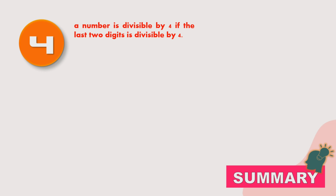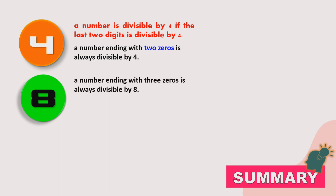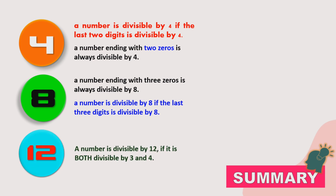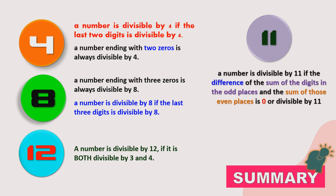Now, we are going to summarize the divisibility rules for 4, 8, 12, and 11. For 4: a number is divisible by 4 if the last 2 digits is divisible by 4; also, a number ending with 2 zeros is always divisible by 4. For 8: a number ending with 3 zeros is always divisible by 8; and a number is divisible by 8 if the last 3 digits is divisible by 8. For 12: a number is divisible by 12 if it is both divisible by 3 and 4. For 11: a number is divisible by 11 if the difference of the sum of the digits in the odd places and the sum of those in the even places is 0 or divisible by 11.